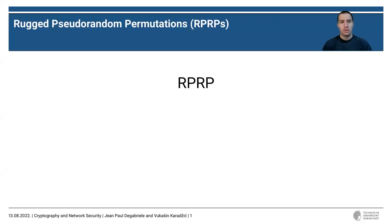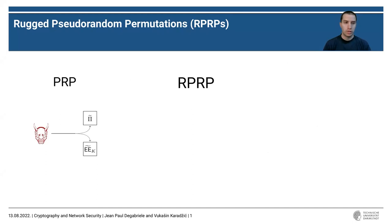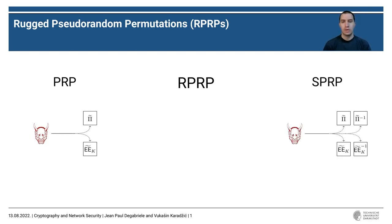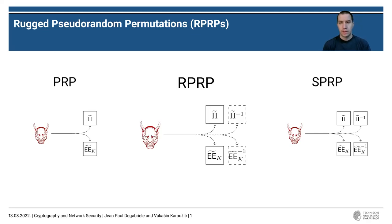We start by introducing a new security notion for variable input length tweakable ciphers mapping a pair of strings to a pair of strings. We call this new notion RPRP — Robust Pseudorandom Permutation. The RPRP notion lies right in between the PRP notion, where the adversary distinguishes between an ideal cipher given full access to the enciphering algorithm, and the SPRP notion, where the adversary has the same task but additionally has full access to the deciphering algorithm. In the RPRP game, the adversary has full access to enciphering but only partial access to the deciphering algorithm.